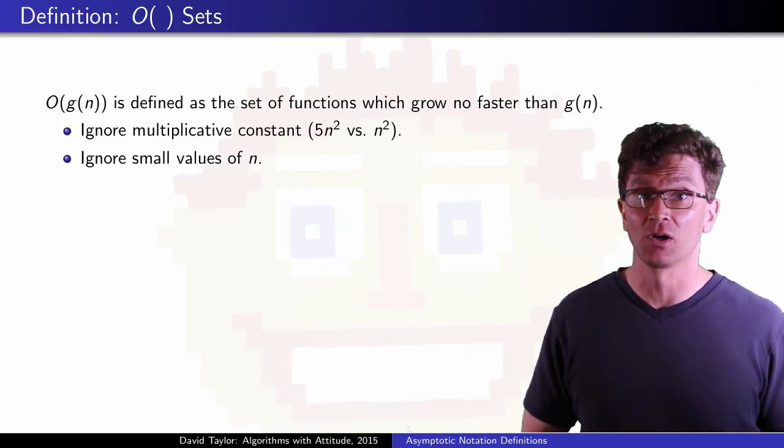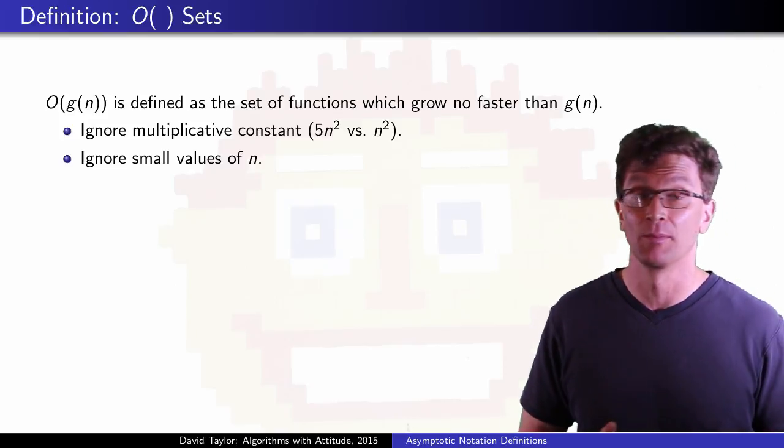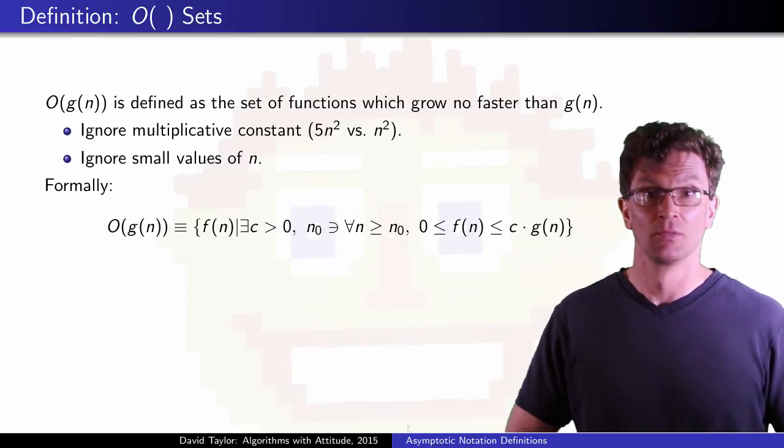We can also ignore small values of n. Generally, we benchmark difficult cases, not easy ones. No one brags that their algorithm calculates the maximum really quickly over two or fewer elements.